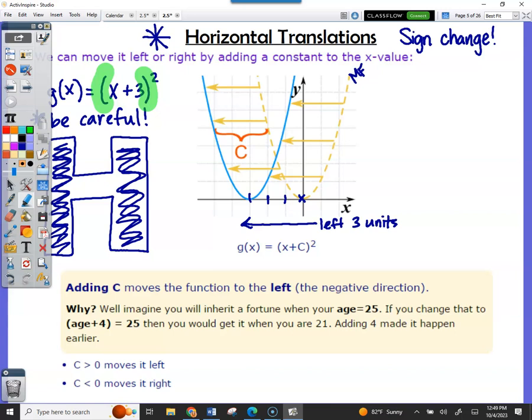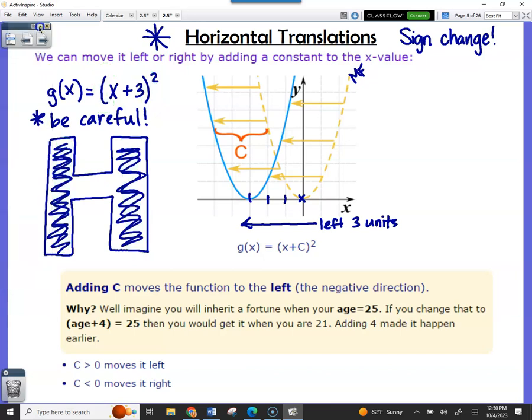So, anytime the number is inside some type of brackets, it's a horizontal movement with a sign change. H, okay, H stands for horizontal, horizontal is right and left, the brackets of the H are to remind you if it's a number on the inside of the parentheses, square root, absolute value, cube, that's it, cube, parentheses.